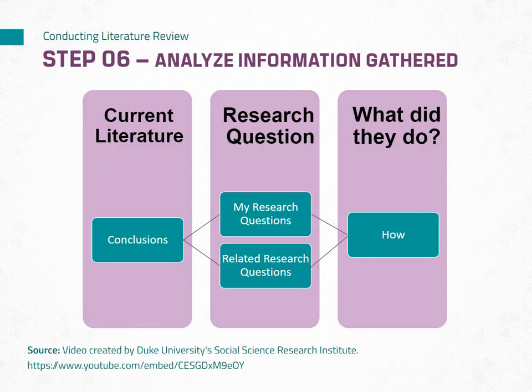As you progress in synthesizing your literature results, you will begin grouping them by theme or category. This step involves organizing the articles based on their commonalities and connections. It's important to note that during the synthesis process, you can also perform your analysis of the articles. In reality, there is often a great deal of overlap between step 5 and step 6. The analysis of the literature, however, focuses solely on how the literature relates back to your research questions and the methodologies used by the researchers to arrive at their conclusions. When analyzing the literature, consider what conclusions researchers have drawn regarding your research question and examine the methods they employed to reach those conclusions. In the next slide, we will revisit Sarah and her research question to illustrate the differences between synthesizing and analyzing literature.